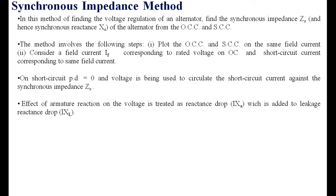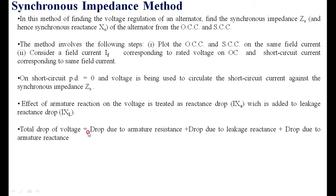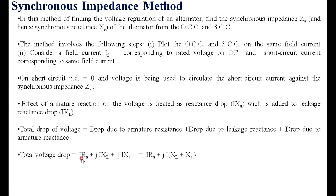The armature reaction effect is treated as an impedance drop in the form of XA. Therefore, the total drops in the alternator are: drop due to armature resistance, drop due to leakage reactance XL, and drop due to armature reactance XA. When XL and XA are added, we get the synchronous reactance Xs. So the total impedance drop is I into (Ra + jXs), which is the synchronous impedance. That is why it is called the EMF method.